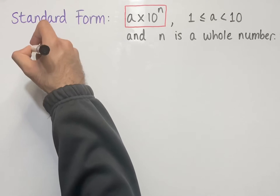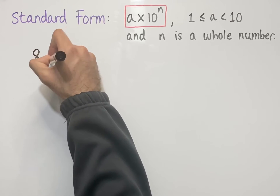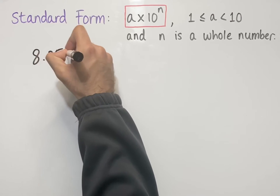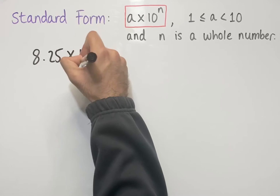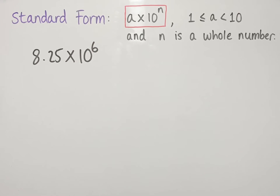Let's say we've got a number in standard form such as 8.25 times 10 to the power of 6, and we want to convert it into an ordinary number. We do that in the following way.